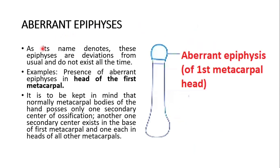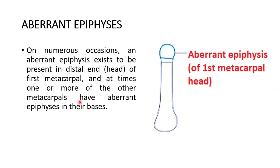Then the aberrant epiphysis. As its name denotes, these epiphyses are deviations from the usual and do not exist all the time. An example is the presence of an aberrant epiphysis in the head of the first metacarpal. Normally, metacarpal bodies of the hand possess only one secondary center of ossification. One secondary center exists in the base of the first metacarpal and one each in the head of all other metacarpals. On numerous occasions, an aberrant epiphysis exists at the distal end — the head — of the first metacarpal, and at times one or more of the other metacarpals have aberrant epiphyses in their bases.